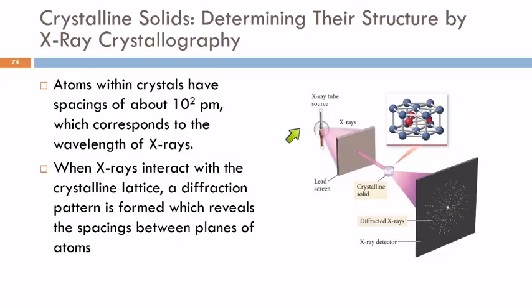So they take the x-rays and they pass them through a hole in a lead screen so that you can get just a nice little beam. And then you send that through the crystalline solid and you get a diffraction pattern, which you can see with an x-ray detector. The diffraction pattern gives us information about the spacing of the atoms or ions or molecules within the crystal.